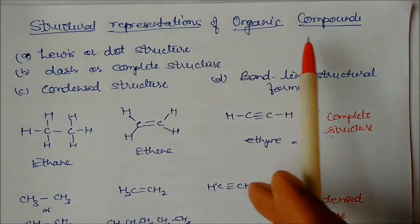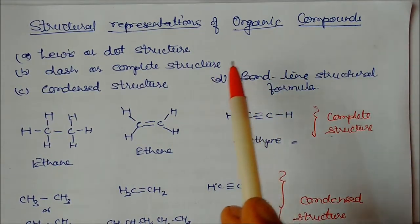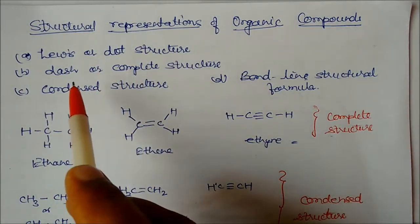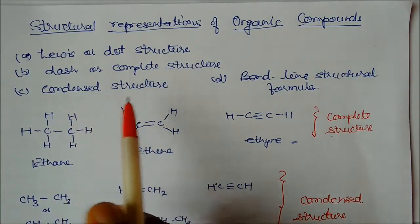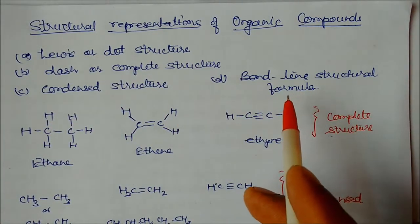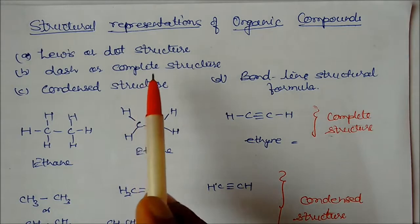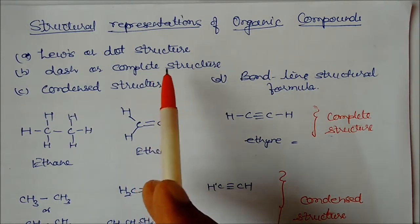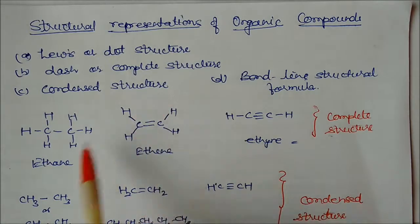We can represent organic compounds in different types of structures. The first is Lewis or dot structures, the second is dash or complete structure, the third is condensed structure, and the fourth is bond line structure formula. In dot structures, we use dots to represent bonds as you have seen in chemical bonding.